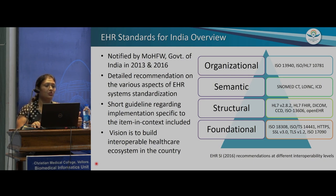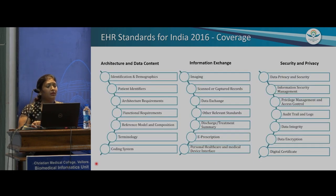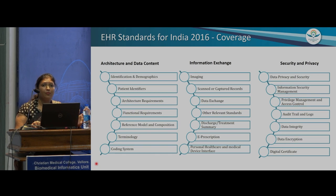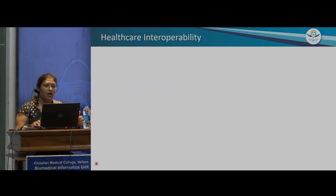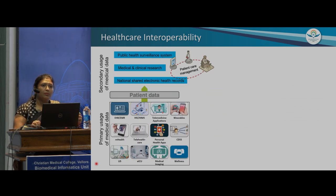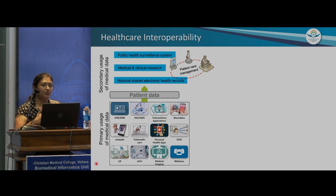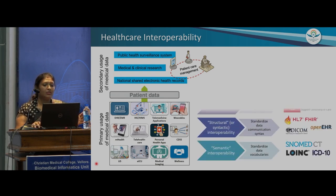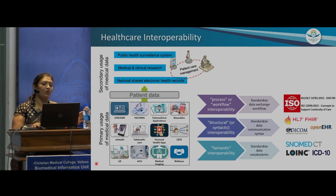The ultimate vision behind these standards is to build an interoperable healthcare system in the country. The standards broadly cover architecture and data content standards, information exchange standards, and security and privacy standards. Healthcare interoperability means multiple health systems collect data in standardized form, and that data — used primarily as medical records — is also used for secondary purposes: sharing medical records, clinical research, and public health surveillance. But all of this is not possible until you have standards in place — structural, syntactic, semantic, and process/workflow standards.